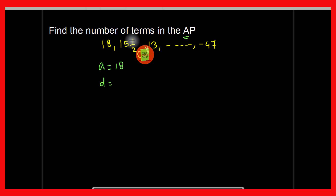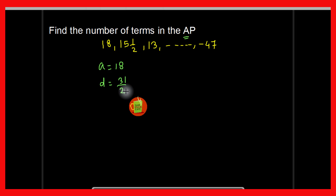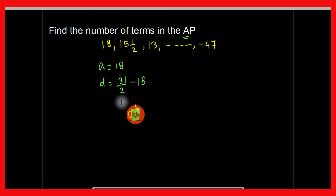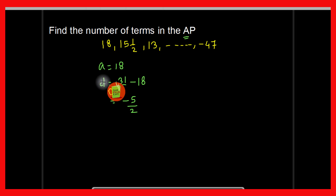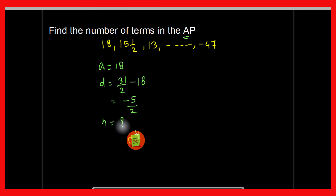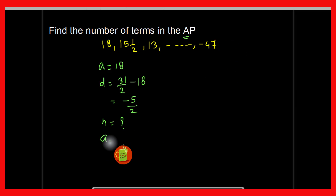The common difference is the second term minus the first term. The second term is 31 by 2, so it will be 31 by 2 minus 18, and therefore d is equal to minus 5 by 2. So here you have got a, you know d, and you have to find the number of terms. The last term is also given: an is equal to minus 47.